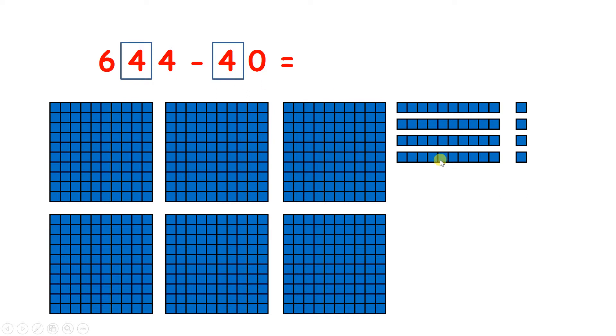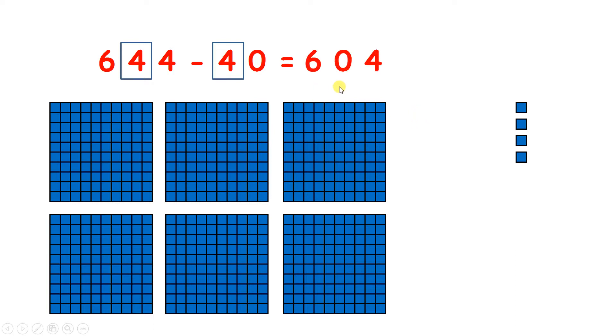So if we subtract one, two, three, four tens, we now have 604 because four minus four is zero, so we don't have any tens.